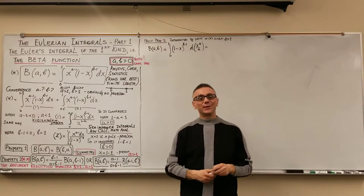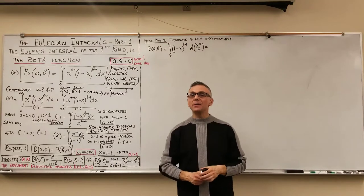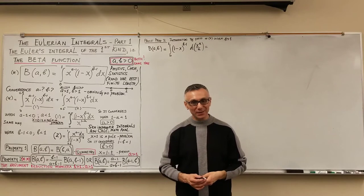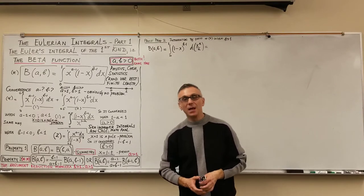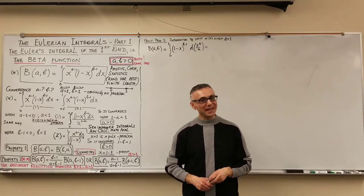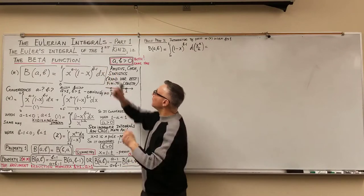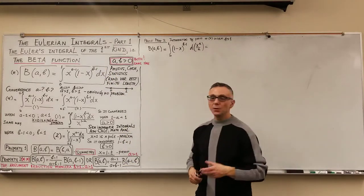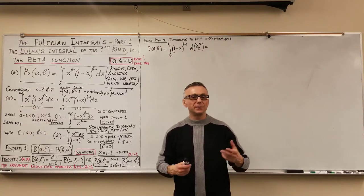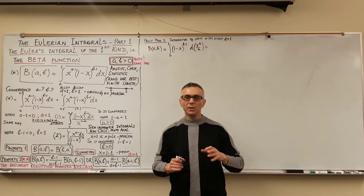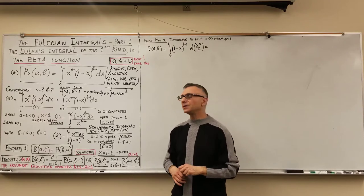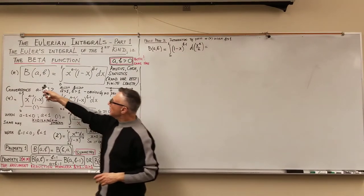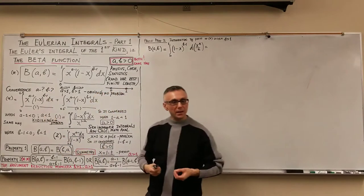Hello, welcome to the Eulerian integrals. I'm starting my series of discussions of Euler's integrals of different kinds. The topic of the lecture today is Euler's integral of the first kind, which is called the beta function. Euler, the great creator, developed so many useful integrals which have a lot of applications in the natural sciences, and this is one of them. The beta function is a function of two input variables, a and b.